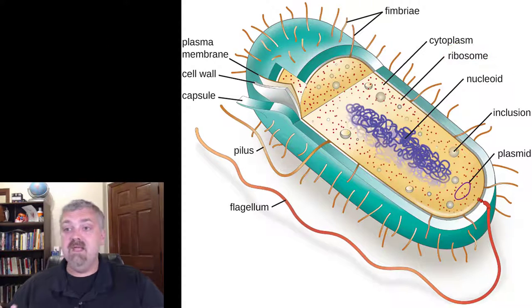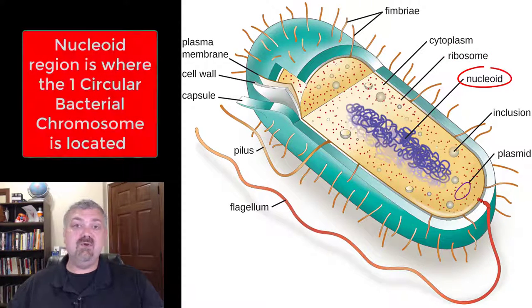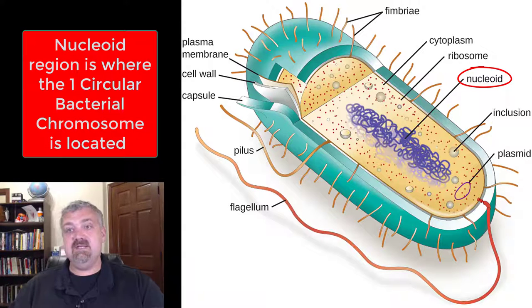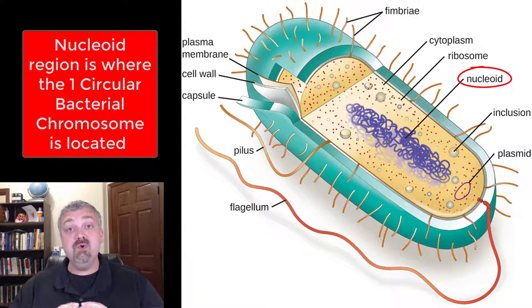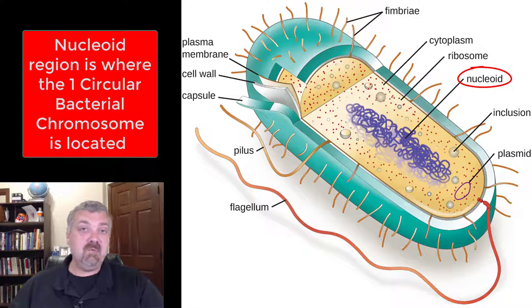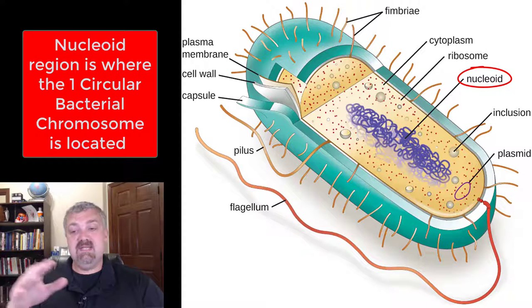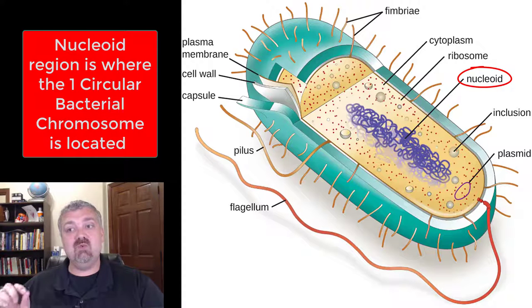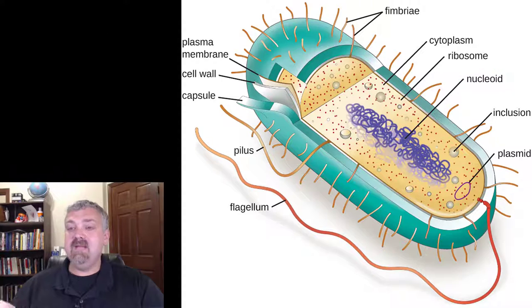The nucleoid, or nucleoid region, is where the DNA is in a bacterium. Eukaryotes have a nucleus that protects our DNA, but bacteria don't. All bacteria have one circular chromosome, and it's tucked into this nucleoid region — that's what the nucleoid is.